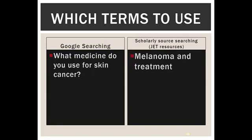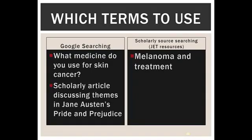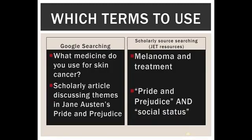I also see students often doing this: a professor says they want scholarly articles discussing themes in Jane Austen's Pride and Prejudice, and that's exactly what students put into the search box. But when you're writing a paper, you don't actually say 'I am now writing a paper' — the word 'paper' probably doesn't appear in your paper. Professionals aren't going to say 'scholarly article' in their scholarly article, so we don't want those words. Pride and Prejudice is definitely an important term, and I also decided to pick a specific theme rather than just searching for themes in general, which makes the research a lot more focused.